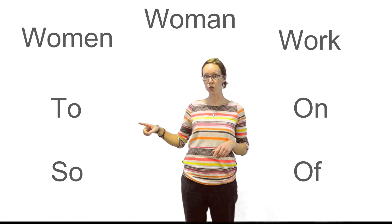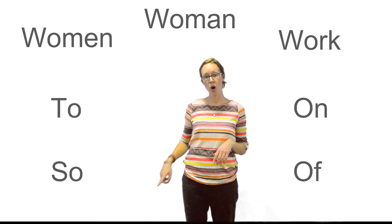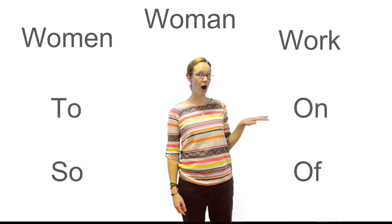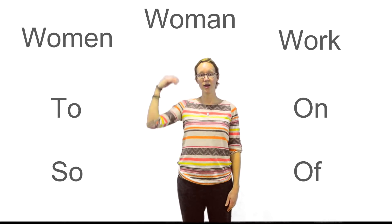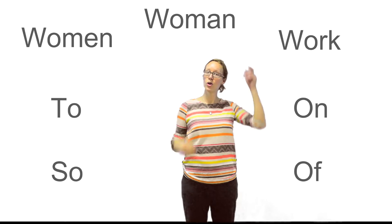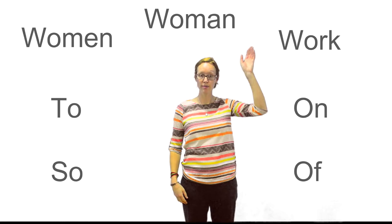The sounds are: O, O, A, U, I, O, R — each word uses the letter O but produces a distinct vowel sound.